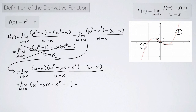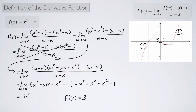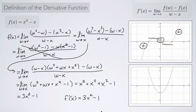Now we can take the limit directly: all w's approach x, so we get x squared plus x times x plus x squared minus 1, which equals 3x squared minus 1. So f prime of x equals 3x squared minus 1. Looking at the graph of 3x squared minus 1, it is zero at two points matching where we saw horizontal tangents, negative in between, and positive on either side — exactly what we expected. The derivative function tells us the slope of the tangent line at any point x, provided the limit exists.